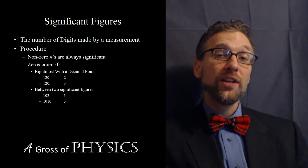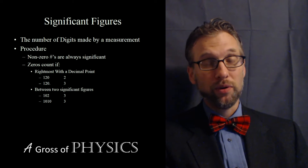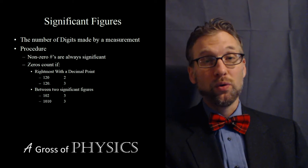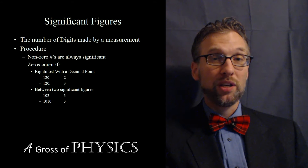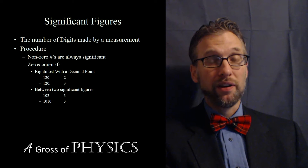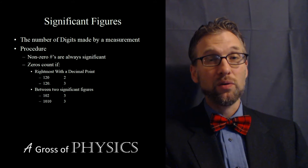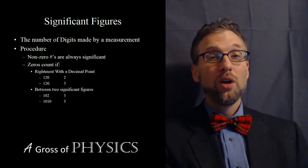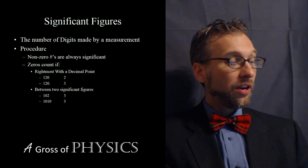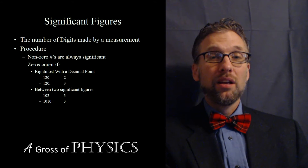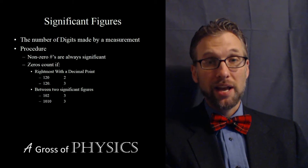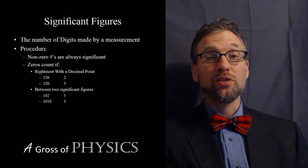If we have 120 with a decimal point, then you would have three significant figures. On the other hand, with the sandwich rule — when the zero is sandwiched between two significant numbers — the digit 102 has all three significant figures. The 1 and 2 are always significant, and the 0 is significant because it's between the 1 and the 2. For 1010, the 0 between the two 1s counts, but the rightmost 0 does not because there's no decimal place.